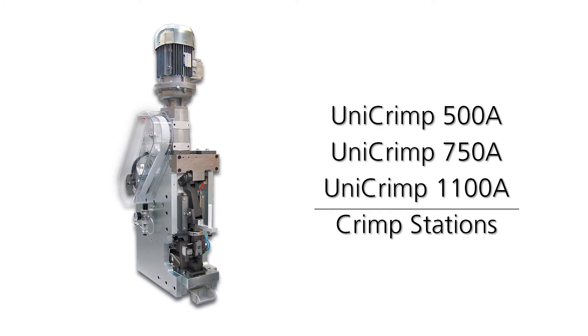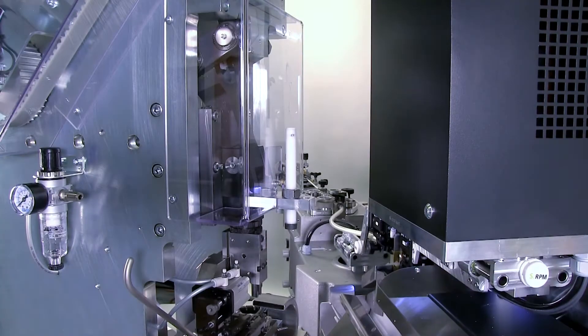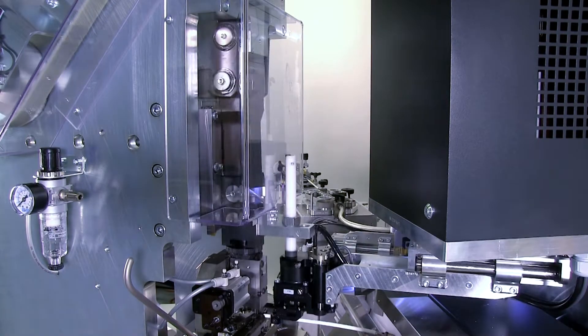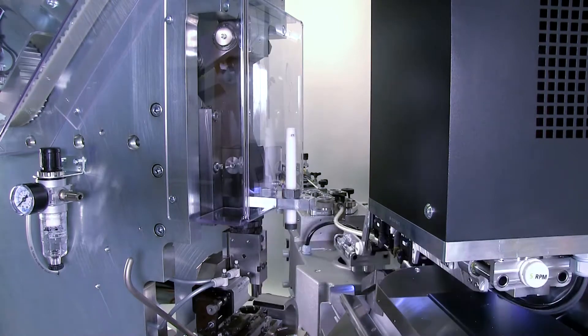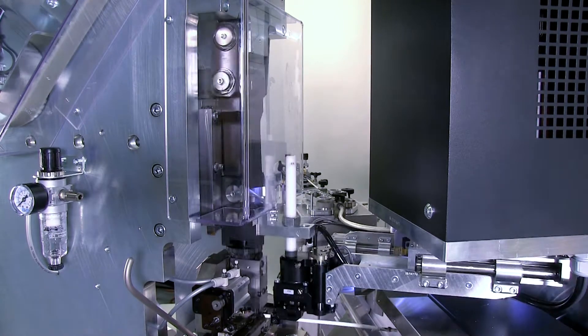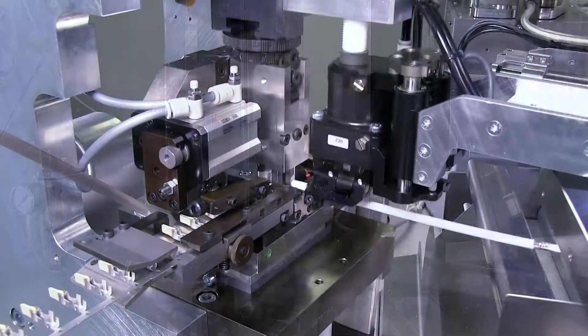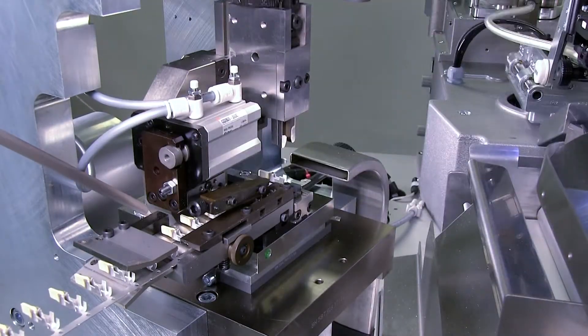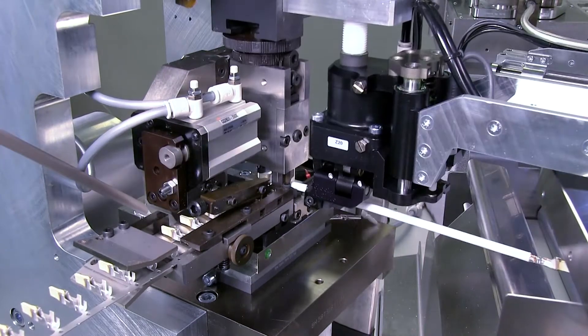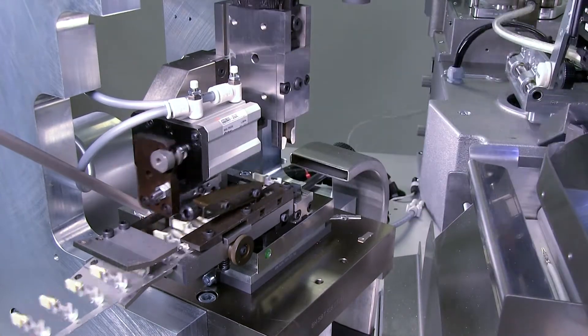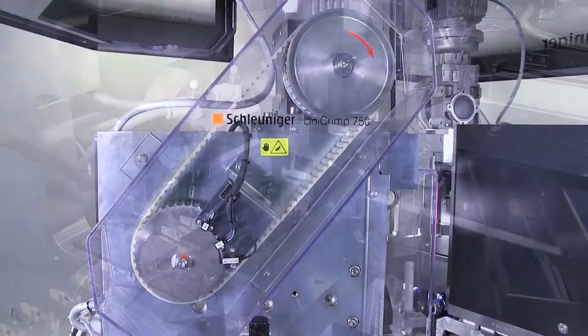For heavy-duty crimping applications, the Unicrimp 500, 750 and 1100 crimping stations are available for use with the Crimp Center 67HD16 and HD25. With 5, 7.5 and 11 tons of crimping force respectively, these Unicrimp stations process wire cross-sections up to 25 mm² or 4 gauge with the proper crimp applicator.